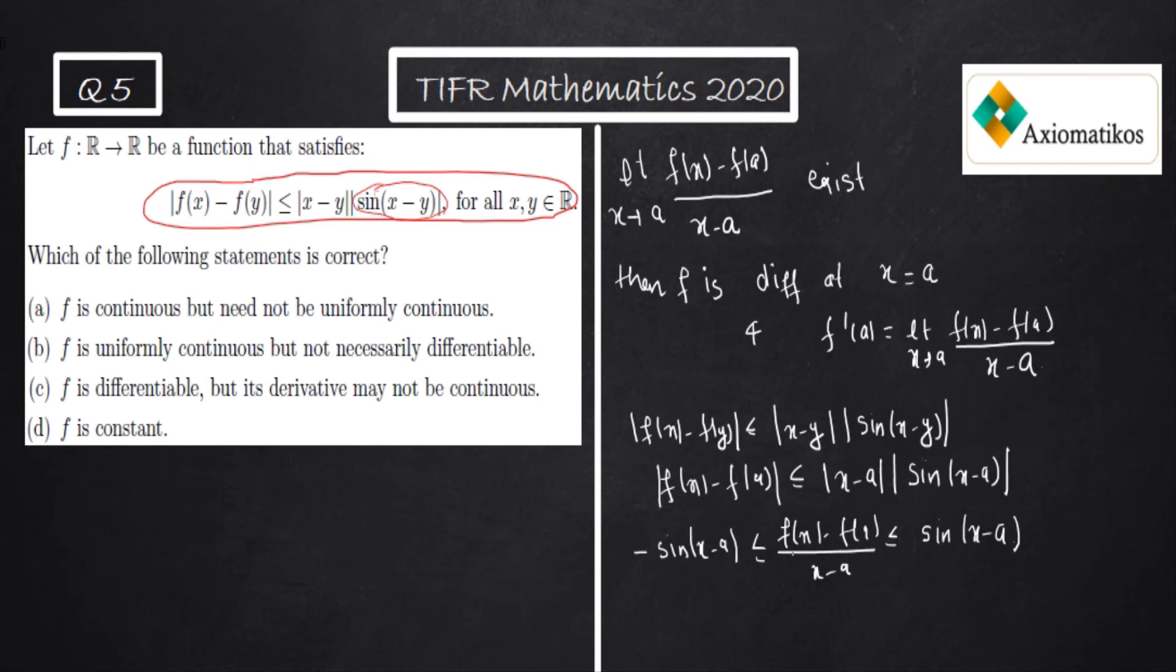Since x approaches a, it will go to 0 and it will also go to 0. So by sandwich theorem, this limit x approaches a of [f(x) - f(a)] / (x - a) will also be 0.